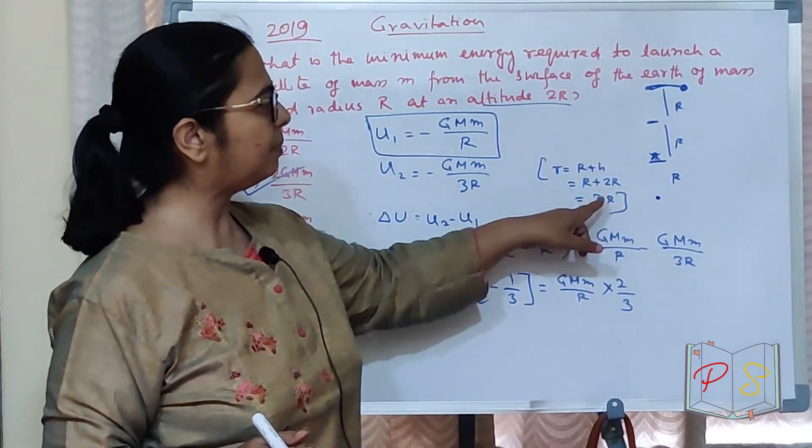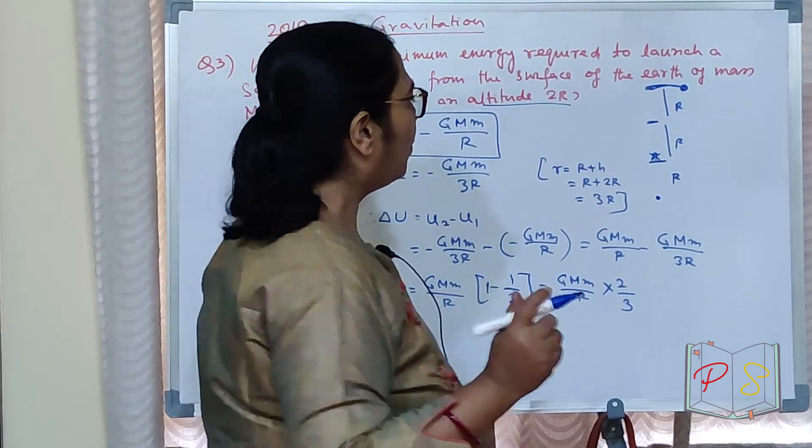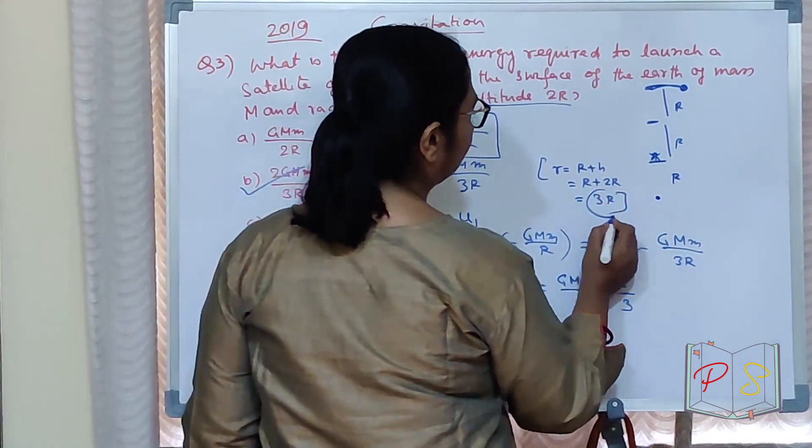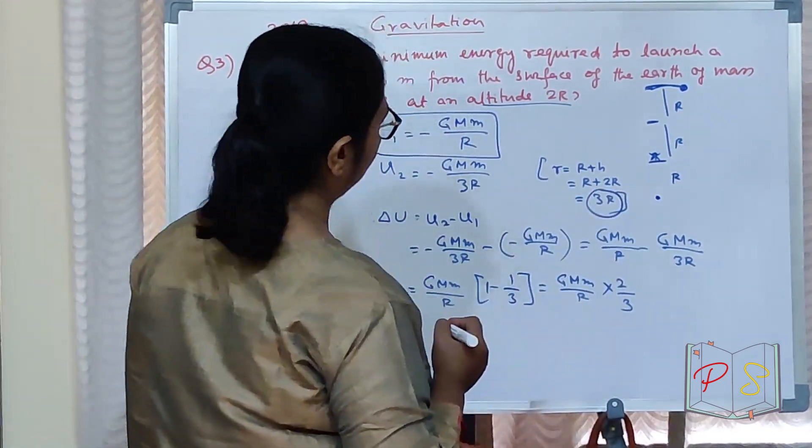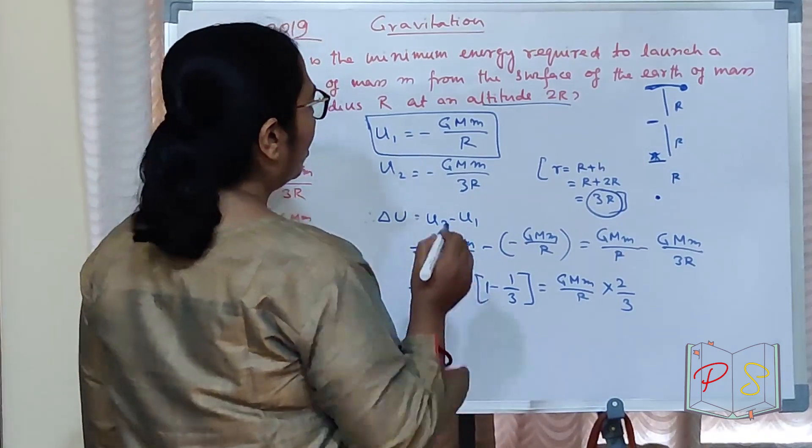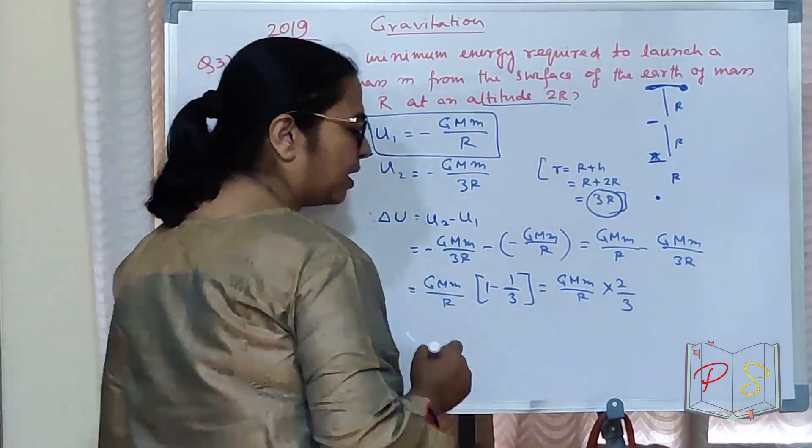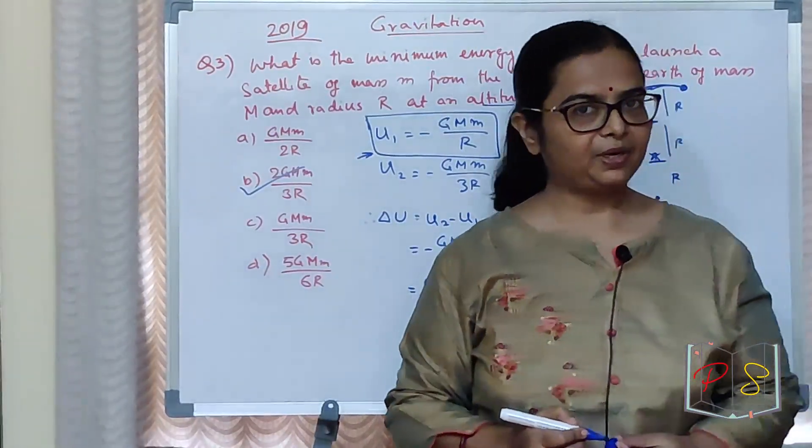Altitude 2R mein jaake total kitna ho gaya? R plus H, R plus 2R, 3R. Potential mein tum jidhar jidhar galti karoge, idhar ek galti karoge, aur idhar ek galti tum karoge. Lekin main wo baat abhi nahi karungi.